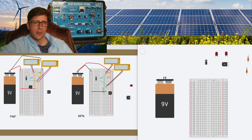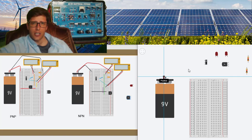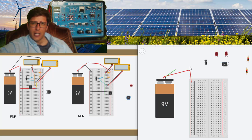If we look right here, this is the NPN transistor. You can see that we have the negative rail on the left-hand side and the positive rail on the right-hand side. If we go to the PNP transistor, the left-hand side is going to be our positive, and the right-hand side is going to be our negative.